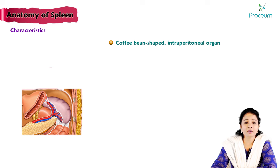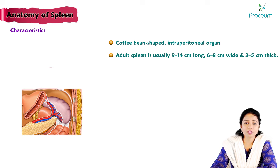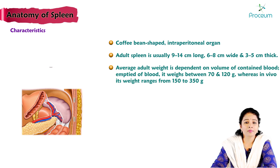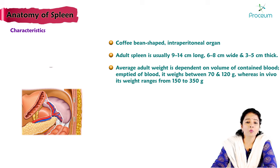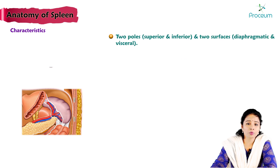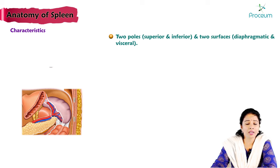Characteristic features of the spleen: it is a coffee bean-shaped intraperitoneal organ. The adult spleen is usually 9 to 14 cm long, 6 to 8 cm wide, and 3 to 5 cm thick. The average adult weight depends on the volume of contained blood — emptied of blood it weighs 70 to 120 grams, whereas in vivo it ranges from 150 to 350 grams. The spleen has two poles, superior and inferior, and two surfaces, diaphragmatic and visceral.